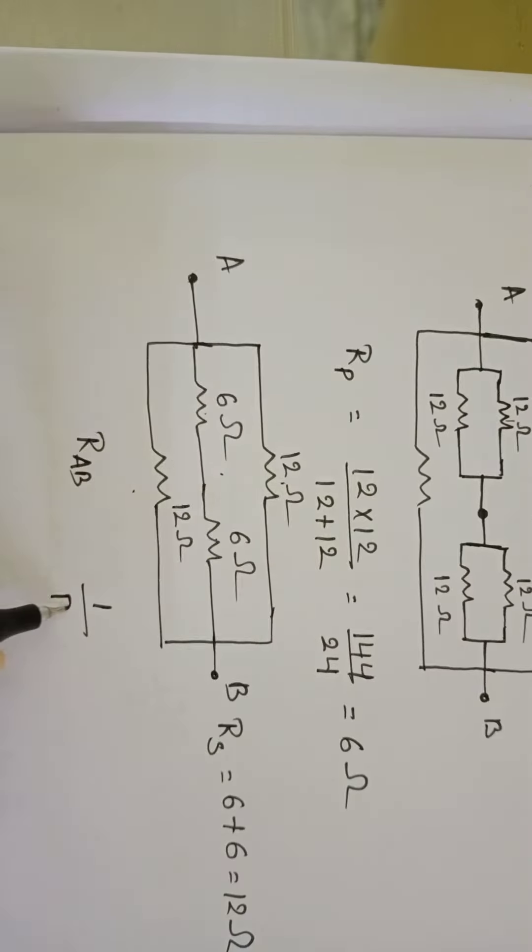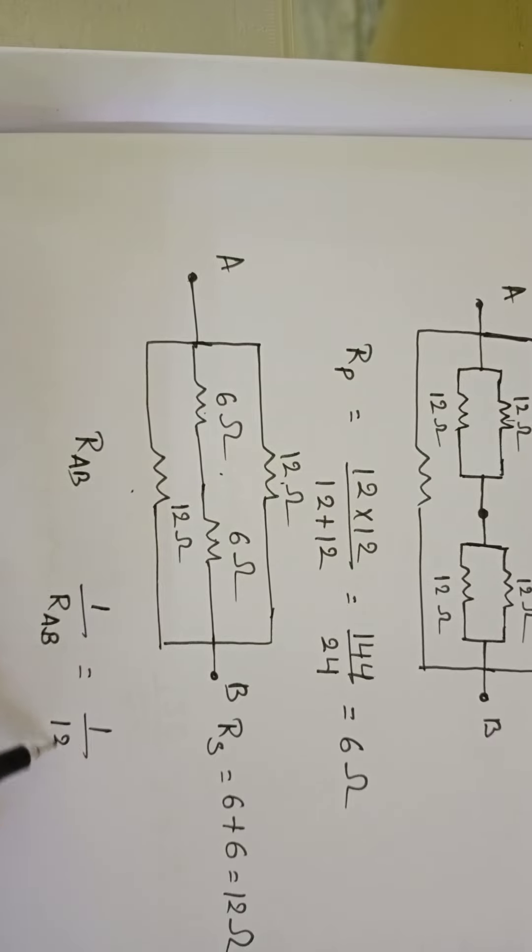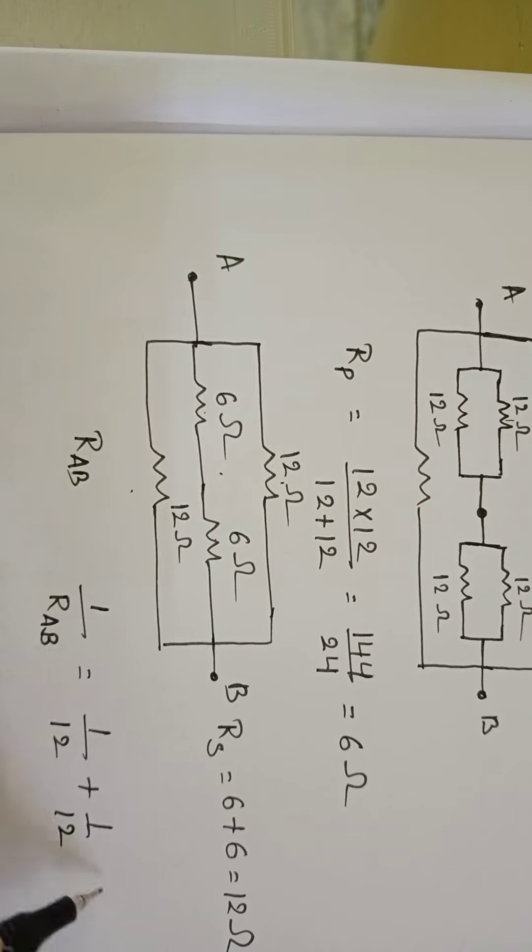So 1 by R_AB is equal to 1 by 12 plus 1 by 12 plus 1 by 12. So LCM 12, 1 plus 1 plus 1, 3 by 12.